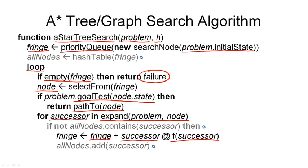And for those of you who've been wondering where we use the parameter h, that is the second parameter to this function, remember that f is defined as g plus h. So that's where we use our heuristic function. And that is all the pseudocode we need for the tree search version of this algorithm.